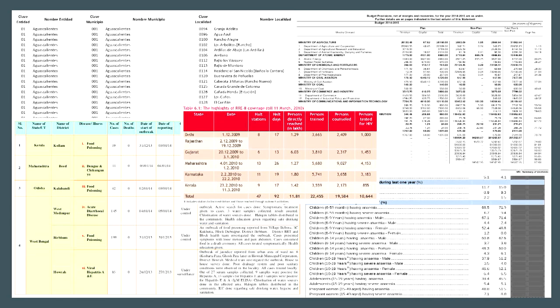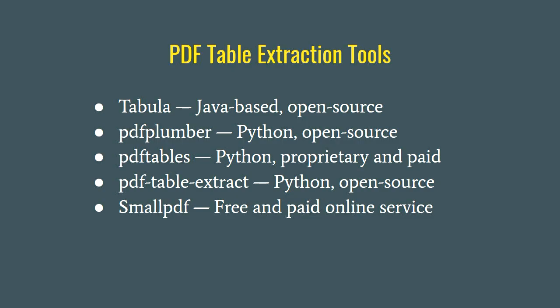What do you do when you come across a problem like this? You look for existing tools that might have already solved it. The first tool I found that worked reasonably well was Tabula — it's Java-based, open source, and has a nice web interface. There's also PDF Plumber, which is Python-based and open source. PDF Tables was released as an open source package but later converted to a proprietary service. PDF Table Extract is unfortunately no longer maintained. And there are a plethora of free and paid online services you can use.